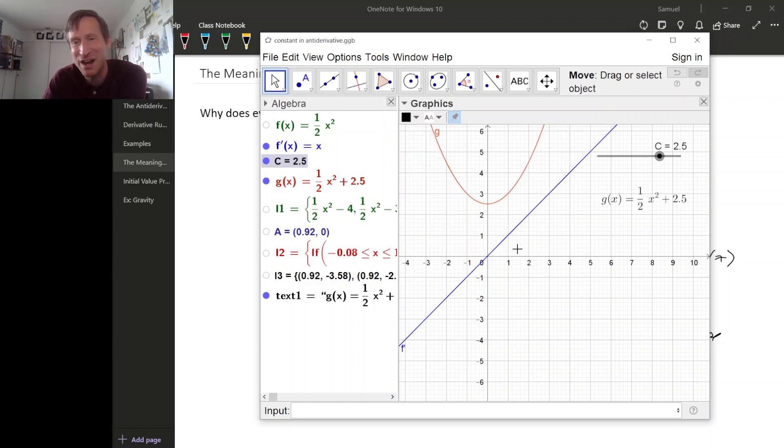Well, if the derivative of the orange graph was this blue one to begin with, then the derivative of the orange graph is still the blue graph even after we've shifted it.